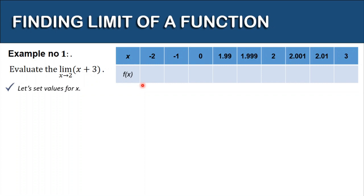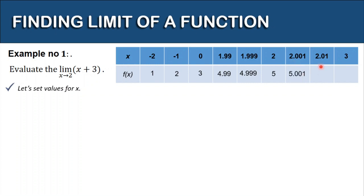If we substitute negative 2 into our function, if x is negative 1 the value of the function is 2, if x is 0 the value of the function is 3, if x is 1.99 the value of the function is 4.99, if x is 2 the function is 5, if x is 2.001 the function is 5.001, and if x is 2.01 the function is 5.01.